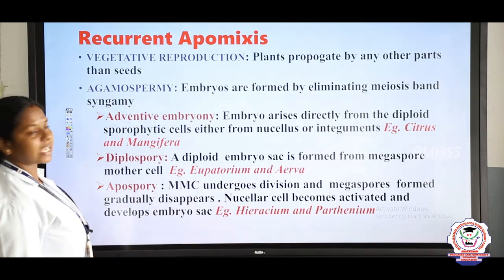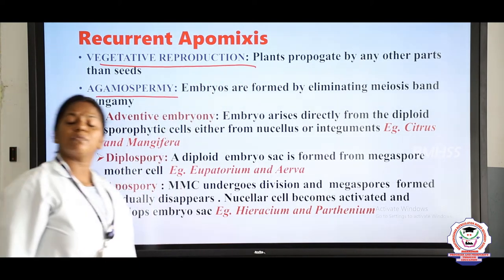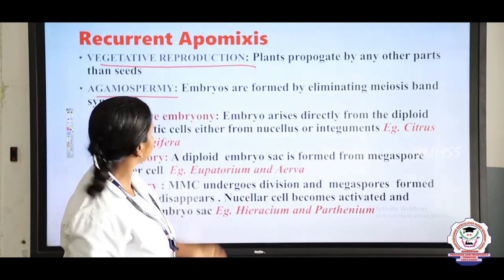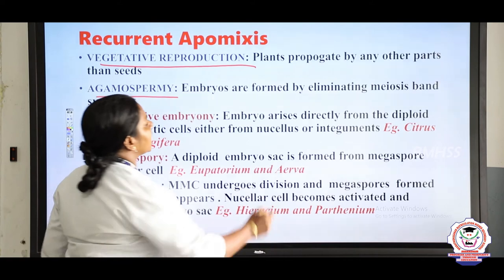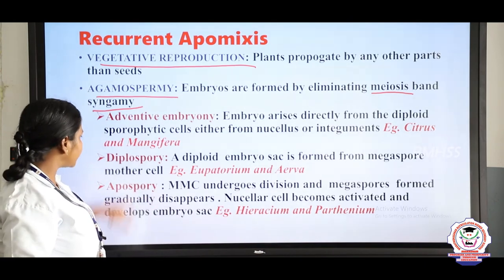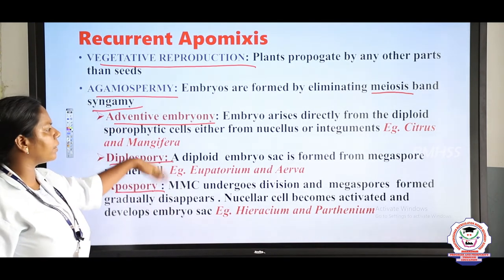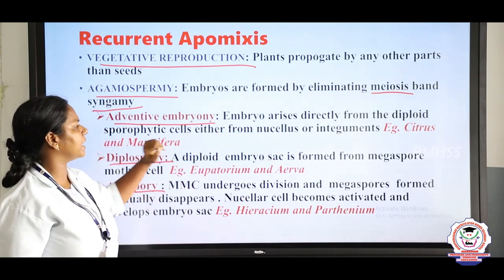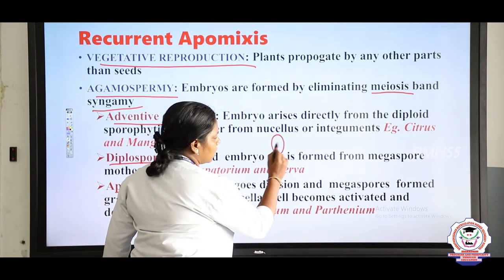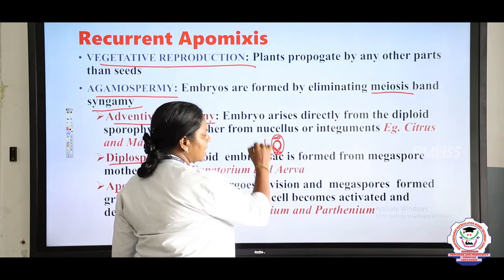In recurrent apomixis: vegetative reproduction means the plant propagates through parts other than seeds — using leaf, root, or stem. Agamospermy eliminates meiosis and syngamy. In adventive embryony, the embryo arises directly from diploid cells of the nucellus or integuments of the ovule. The antipodals and synergids — these cells of the nucellus or integuments develop into the embryo.